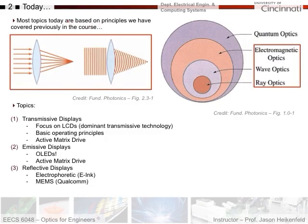Most of today's topics we've covered previously. We've already gone through a lot of the basic principles, so it should be fairly easy and straightforward. We'll cover transmissive displays focusing on LCDs and their basic operating principles, active matrix drive, emissive displays such as OLED, and reflective displays including one that uses interference.